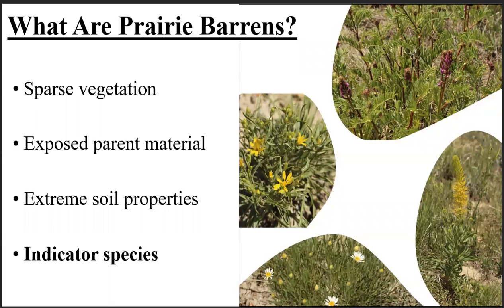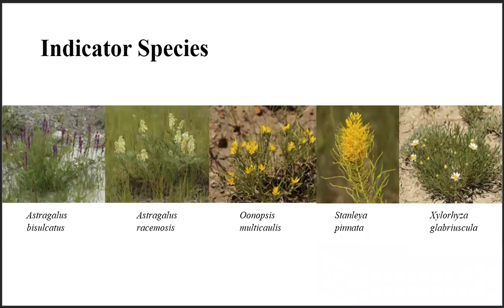This combination of extreme properties means a lot of plants we would normally find in prairies aren't able to grow in barrens, but there are some plants that prefer to grow in these regions. We call such plants indicator species. Indicator plants are diverse, ranging from legumes to mustards, but they all prefer soils with extreme properties, and they all accumulate high concentrations of toxic elements in their tissues, which I will come back to later.